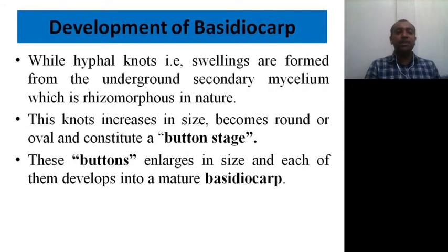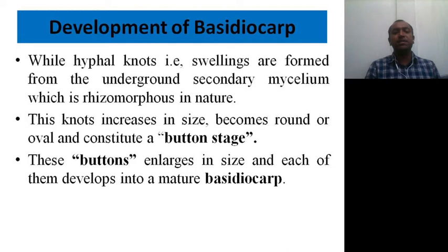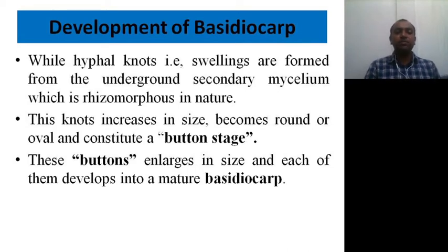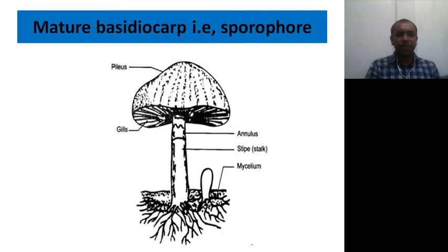Regarding the development of the basidiocarp, fungal hyphal knot swellings are formed from the underground secondary mycelium, which are rhizomorphous in nature. These knots gradually increase in size, become oval and round, and constitute the button stage. That is why Agaricus bisporus is also known as button mushroom.